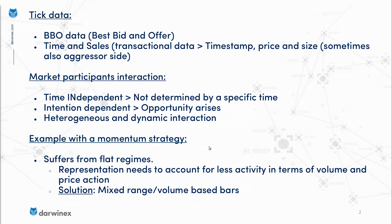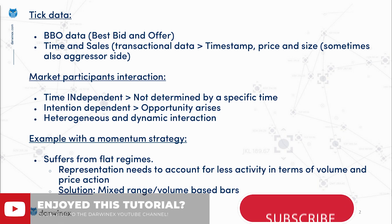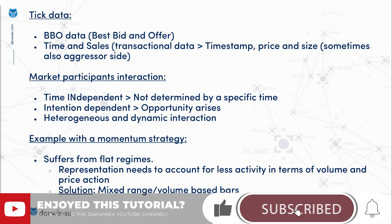Let me illustrate this with an example. Suppose you have a momentum strategy that suffers from flat regime periods. If you have a cleverly developed representation that accounts for less activity in terms of volume and price action, you could create mixed range volume bars with two parameters — the price movement threshold and the volume threshold — and base your decision making on the interaction between the two. You could filter a lot of that non-informative behavior and trade less during those periods so the strategy doesn't suffer as much. Let's jump into the code in the following video to see how this is implemented in the different data structures.